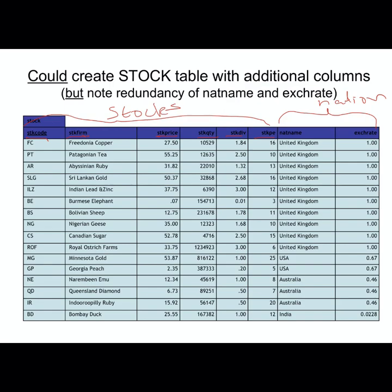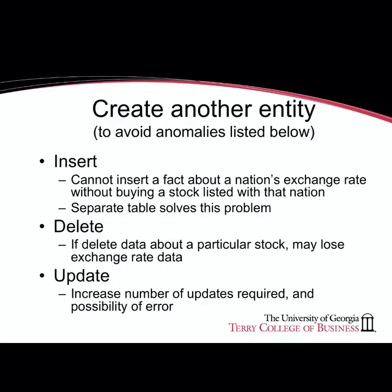When thinking about data modeling and the storage of data in tables, there are three issues that arise when storing data in one table. These are insert anomalies, delete anomalies, and update anomalies. Insert anomalies occur when we cannot insert data without having another piece of data about a different entity present. Delete anomalies occur when deleting data causes unrelated data to be lost. Update anomalies occur when an update requires changing multiple rows instead of just one.